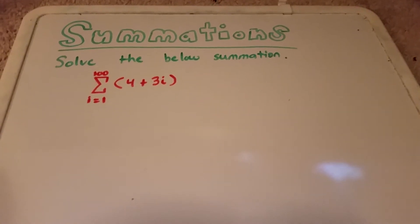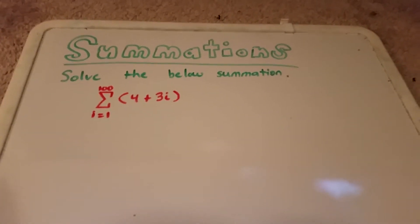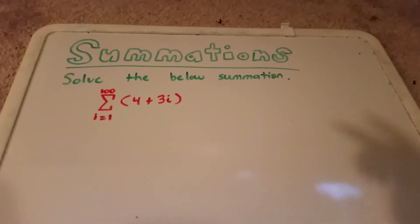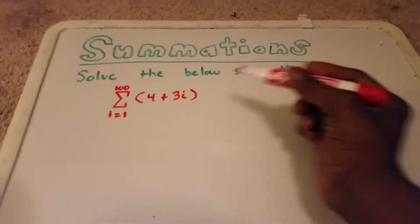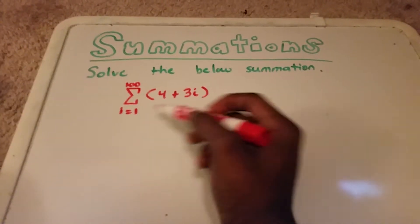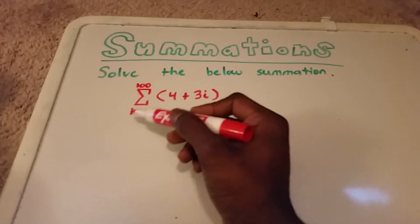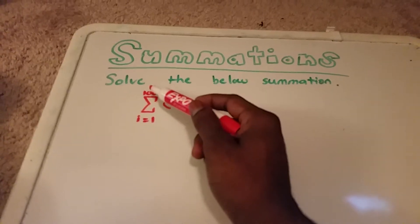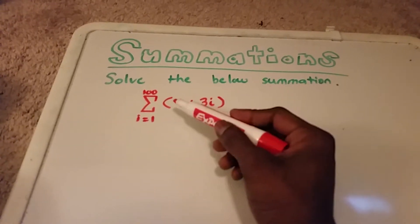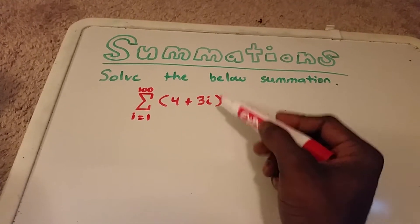Hey YouTube, this is a video on summations. So here we have a problem — we want to solve the below summation. Here's the summation in red: from i equals 1 to 100, we want to sum 4 plus 3 times i.